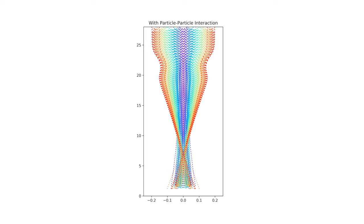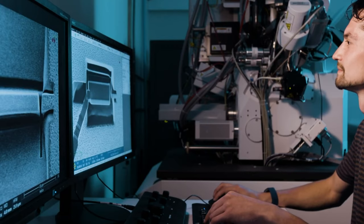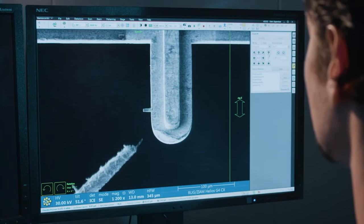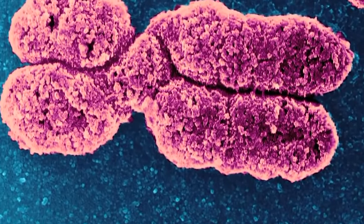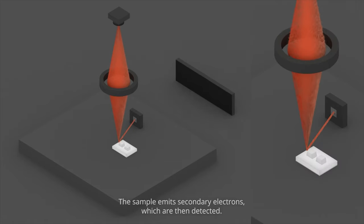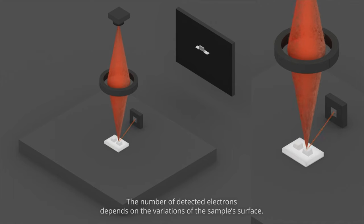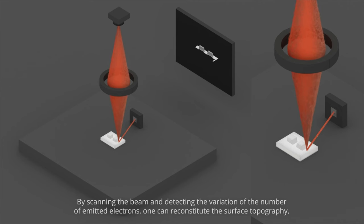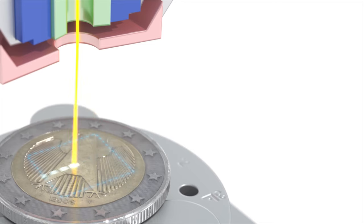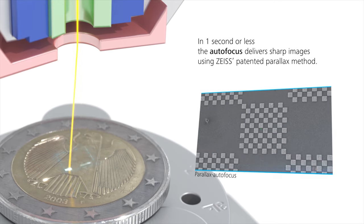Then this beam hits the surface of the required sample for research. Just like light hitting the surface of a material in an optical microscope, the electron beam gives us information and allows us to actually see the sample. There are two types of electron microscopes that are very different. The first is the scanning electron microscope, or SEM. In it, a focused beam of electrons hits the surface of a sample of almost any size, and through the magic of physics, some electrons knock out other electrons from the atoms of the material we are looking at. These new electrons are called secondary electrons.